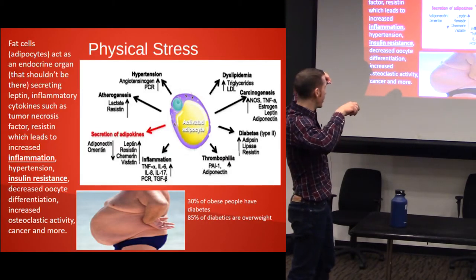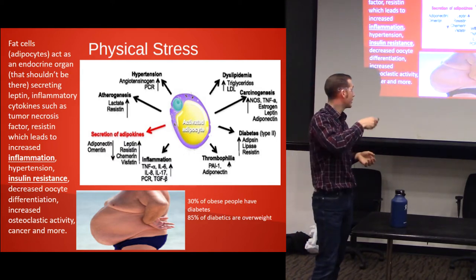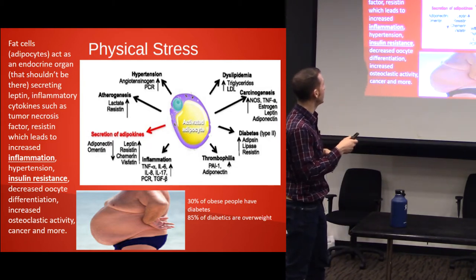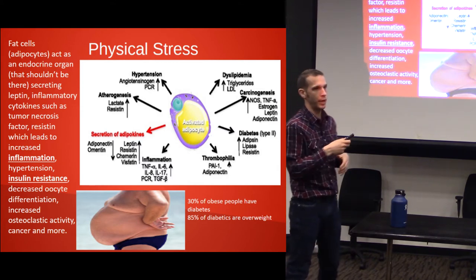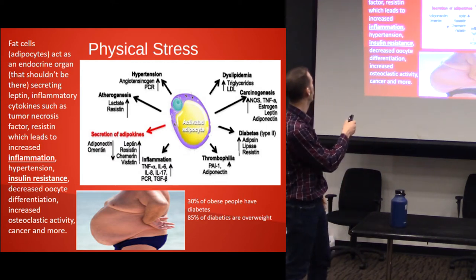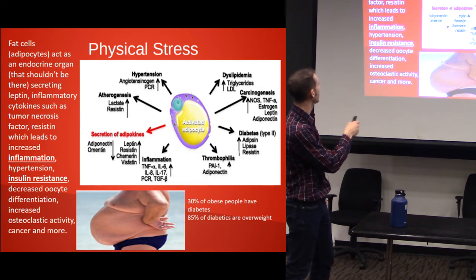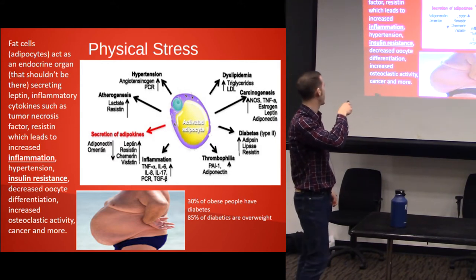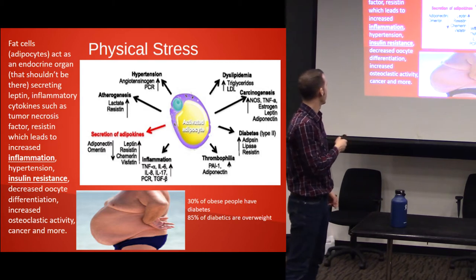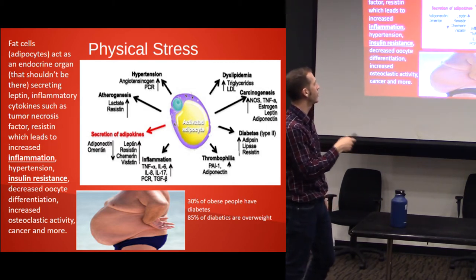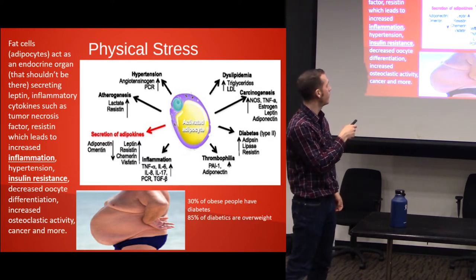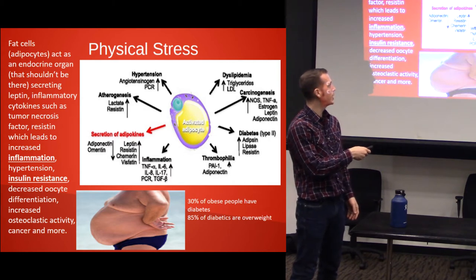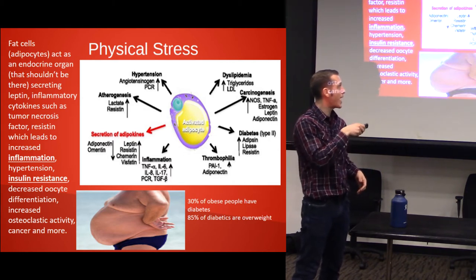Here's one type of physical stress. This is a hormone-producing factory and not the kind you want. These fat cells — adipocytes — actually act as an endocrine organ. They produce hormones, secreting inflammatory cytokines. They increase tumor necrosis factor, which leads to inflammation, hypertension, insulin resistance, cancer, and more. This also produces a lot of leptin, and the body becomes leptin resistant at the same time. The statistics: 30% of obese people have diabetes, and 85% of diabetics are overweight.